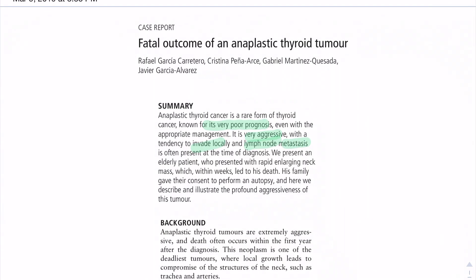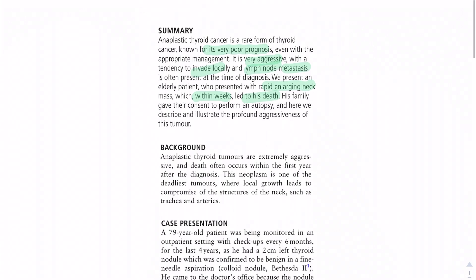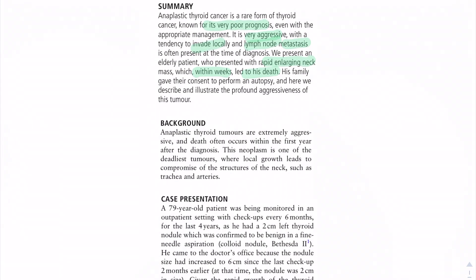So we have a patient who came in. He's an elderly patient, 79-year-old, presented with a larger neck mass within weeks that led to his death, unfortunately. So again, anaplastic thyroid tumors, they are very aggressive. They tend to lead to death within the first year of diagnosis.